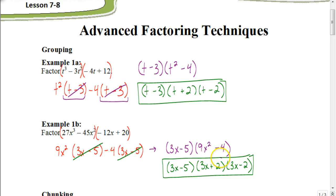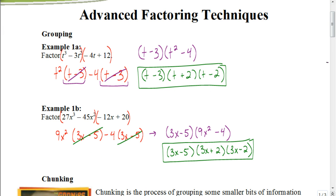That 9x squared minus 4 is a difference of two squares, and it factors down to be 3x plus 2 times 3x minus 2. If you've forgotten how to recognize a difference of two squares, make sure you go back and watch that video. That is how we use this technique of grouping. In the next video, we're going to learn about another technique called chunking, so make sure to watch that next video.